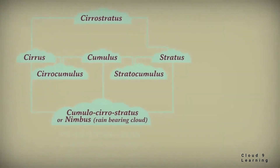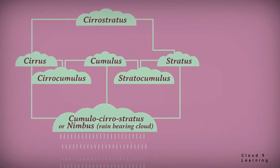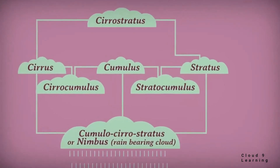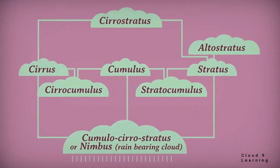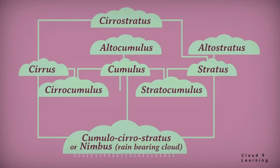Altostratus clouds were formed from Stratus clouds — as they form above Stratus, they were named Altostratus. Similarly, Altocumulus clouds were formed from Cumulus clouds, and as they form above Cumulus, they were named Altocumulus. Alto means high. Finally, Cumulus and Nimbostratus together combine to form Cumulonimbus.